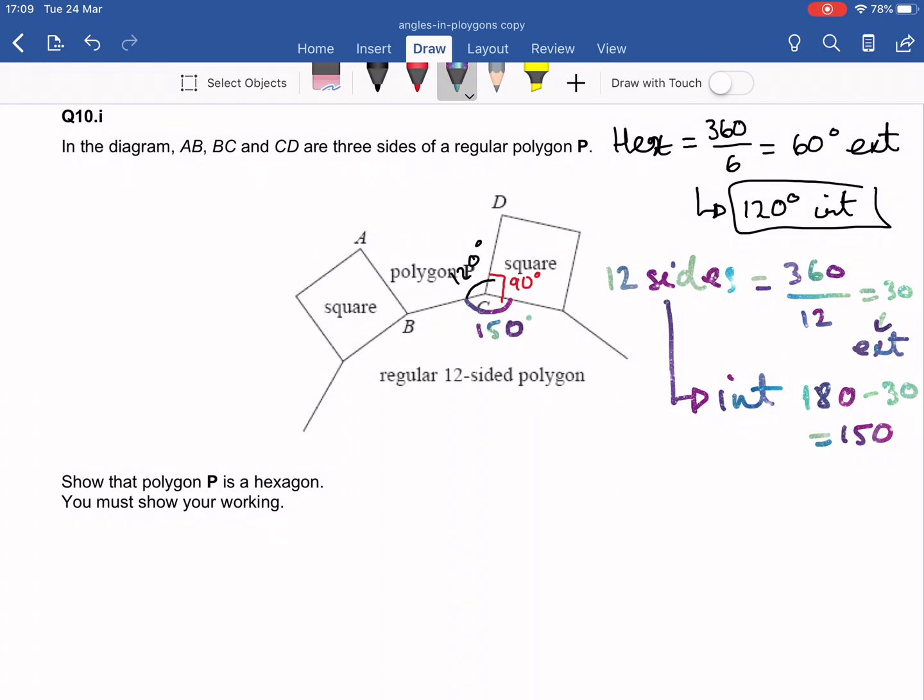So I know that all these three angles, so the black one, the red one plus the super fancy galaxy colored one, add up to 360 degrees because they're at a point. So I'm going to say that angle DCB is equal to angle ABC, and it's equal to 360 minus the 12-sided one minus the square. And if I do that in my calculator, I get 120 degrees.